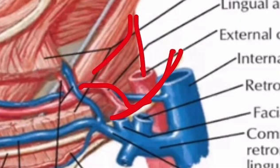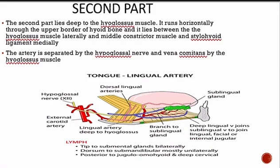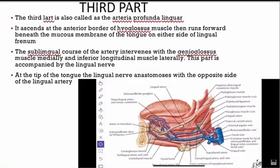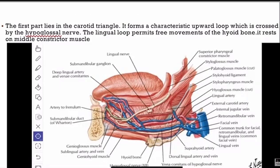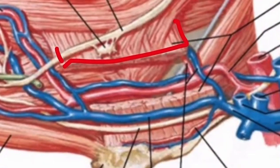Moving on to the second part: the second part lies deep to the hyoglossus muscle. It runs horizontally through the upper border of the hyoid bone. It lies between the hyoglossus muscle laterally, and the middle constrictor muscle and stylohyoid ligament medially. In the diagram the hyoglossus muscle is cut, so the second part — which lies deep to it — can be seen.